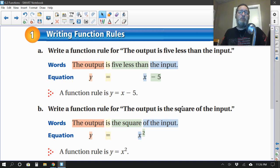Here's another one. The output is the square of the input. Now, if you've had me as a teacher, you know that squaring means raising to the second power. So let's turn that into an equation. So the output, and once again, the output is the y value, is means equals, the square, so we raise something to the second power, of the input. And that's going to be our x variable. So the rule is y equals x squared.